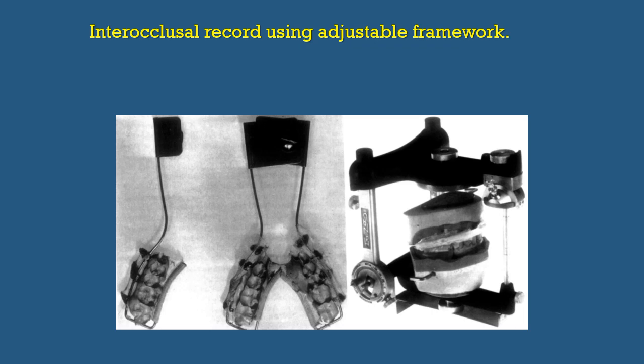To make the inter-occlusal record more accurate, we can use what is called an adjustable framework. There are different types — some for unilateral situations and some for bilateral. The framework holds the wax and the corrected zinc oxide eugenol, and after taking the inter-occlusal record you proceed with mounting by attaching the lower cast to the maxillary one, as shown in the pictures.